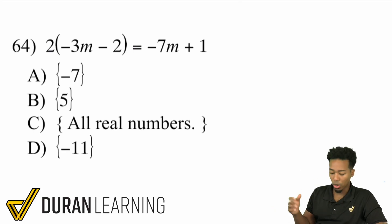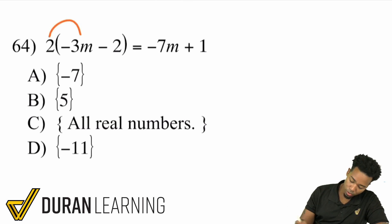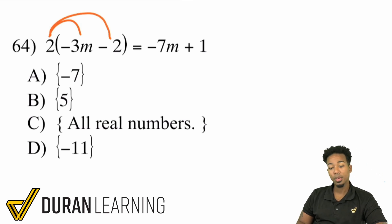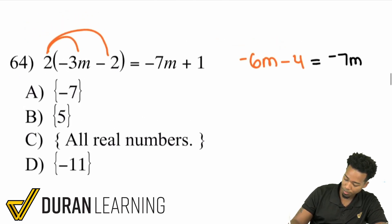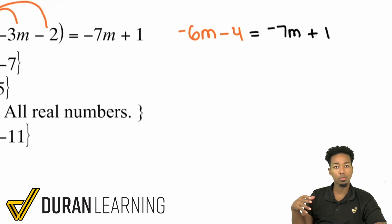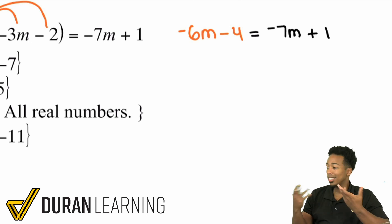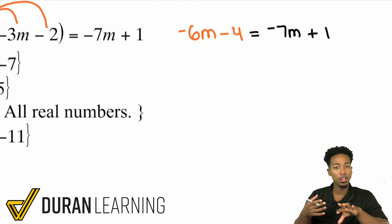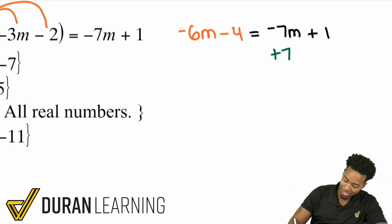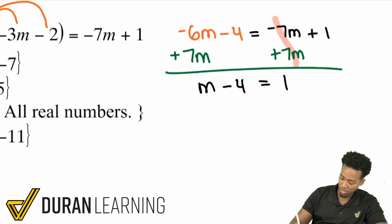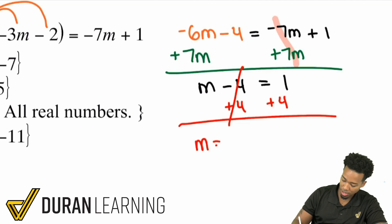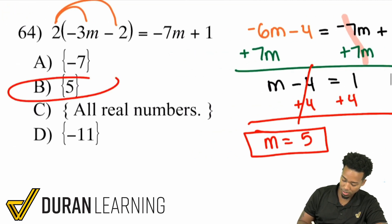Problem 64: distribute 2 to the parentheses. 2 times negative 3m is negative 6m, and 2 times negative 2 is negative 4. On the right side we have negative 7m plus 1. Add 7m to both sides — that cancels on the right, leaving negative 6m plus 7m which is positive m, minus 4 equals 1. Add 4 to both sides: m equals positive 5.